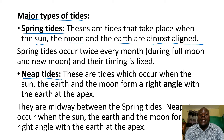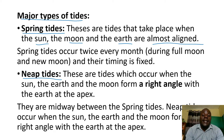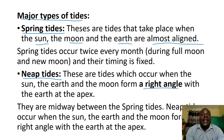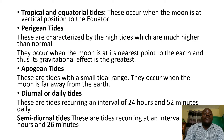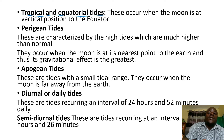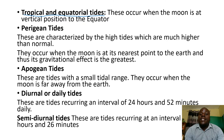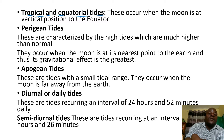We have neap tides — these are tides which occur when the sun, the earth, and the moon form a right angle with the earth at the apex. We also have tropical or equatorial tides; these occur when the moon is at a vertical position to the equator.